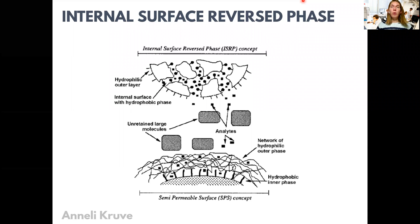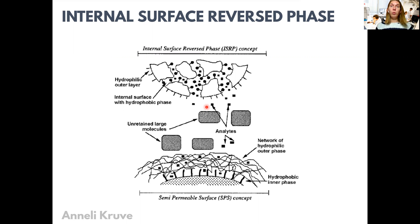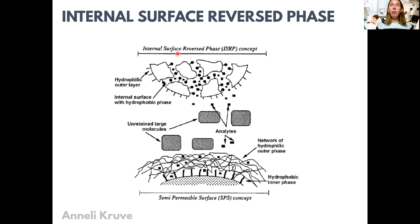The SPE with internal restricted surface is a kind of SPE where the surface of the SPE particles that can retain analytes is restricted to analytes with only specific size. This is mostly for extracting compounds from biological samples where we could have very large molecules such as proteins, but we don't want them to retain on our sorbent. One possibility is to combine size limitation with the actual interactions in the SPE.